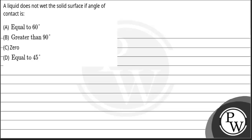Hello, let's read this question. The question says that a liquid does not wet the solid surface if angle of contact is: A equal to 60 degree, B greater than 90 degree, C zero, D equal to 40 degree.